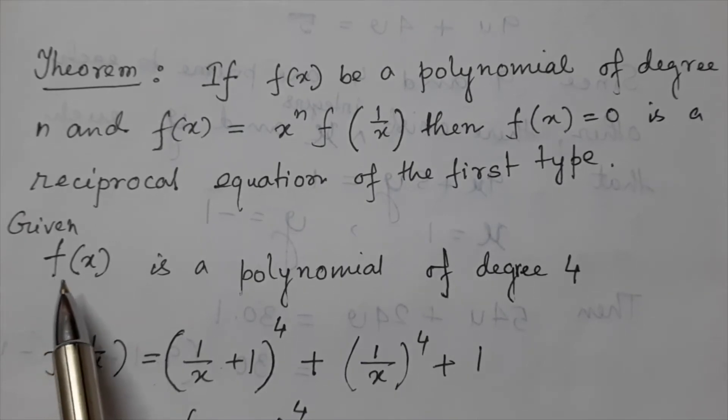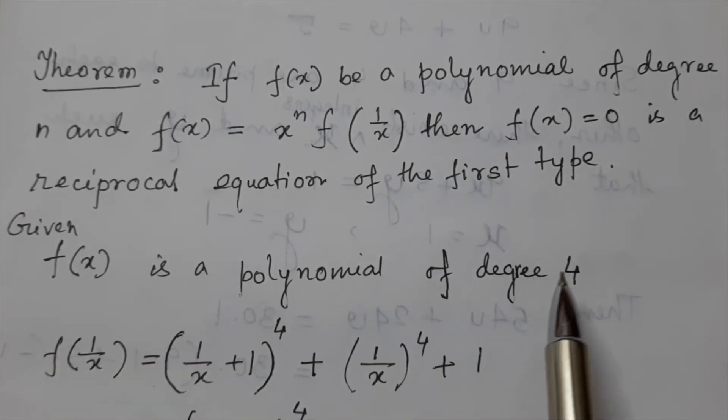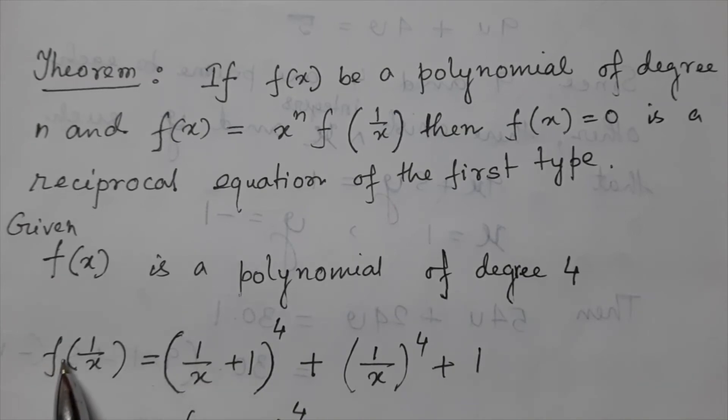Now given that f(x) is a polynomial of degree 4, then replacing x by 1 by x, f of 1 by x becomes 1 by x plus 1 to the power 4 plus 1 by x to the power 4 plus 1.